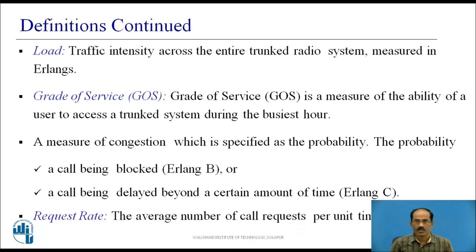Request rate: the average number of call requests per unit time, denoted by mu (μ). Typically, in an office environment it could be 5 calls per hour, from a home environment it could be 2 calls per hour, and in a call center it could be 35 calls per hour or even more. So mu changes from place to place.